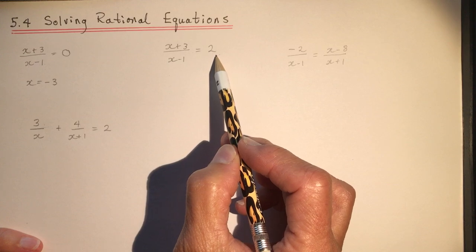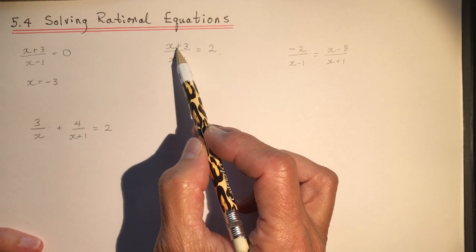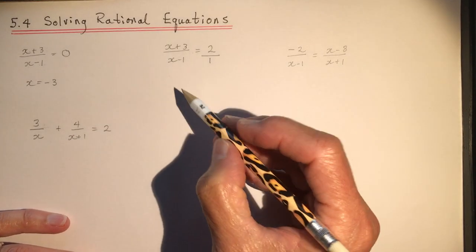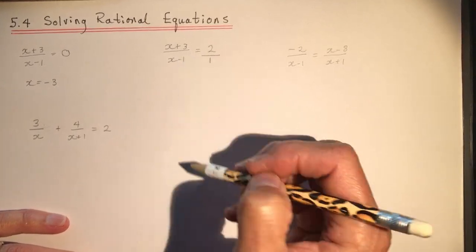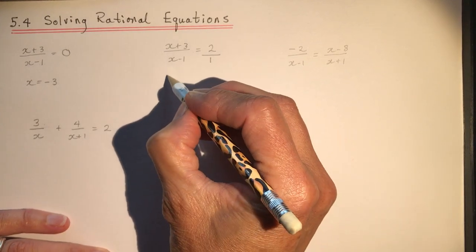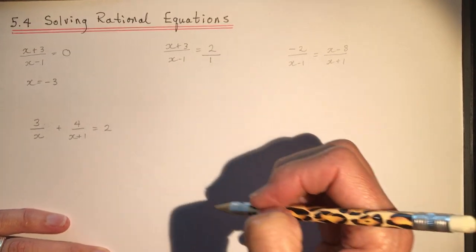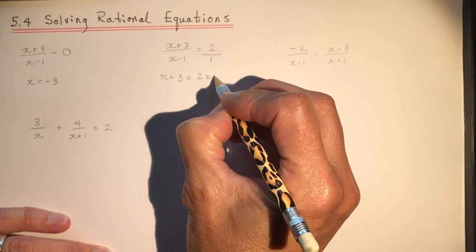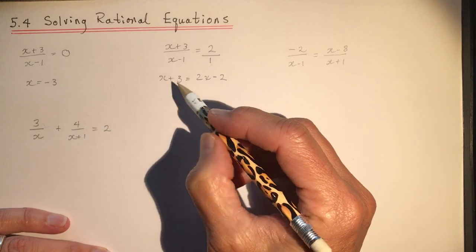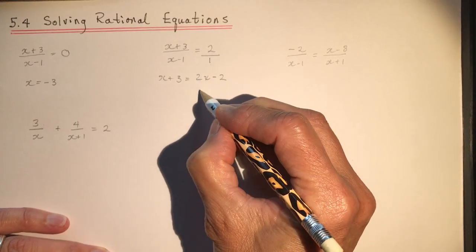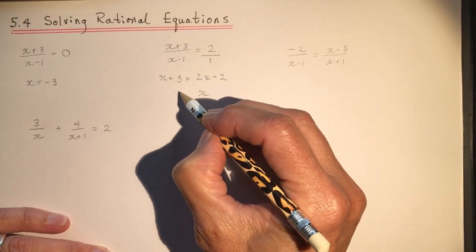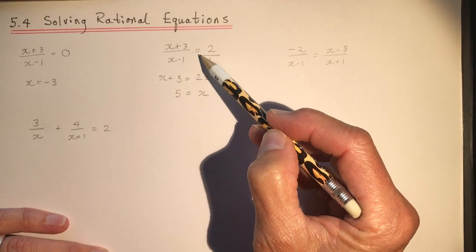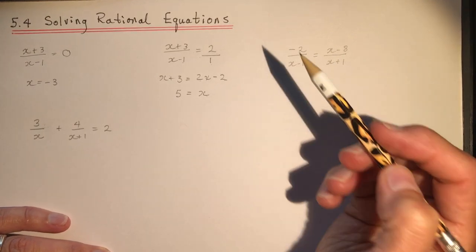You can't just solve for the numerator equal to 2. What you can do is put this over a 1, and because we have a nice setup of just two ratios being equal, we can simply cross multiply. So x+3 times 1 and x-1 times 2. Bring everything to one side: x+3 = 2x-2. Bringing the variable over gives x = 5. Check: (5+3)/(5-1) = 8/4 = 2. Correct!